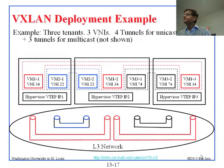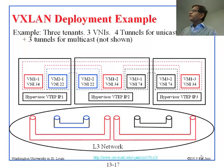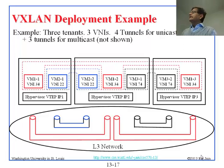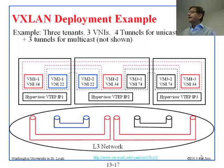Here is an example of the tunnels. We have one physical server with two VMs — one red tenant, one blue tenant — and a hypervisor. In another server there are three VMs: blue, red, and black. In another one, we have black and red. Blue should be able to communicate with blue and not know anything about red. Similarly, red communicates among themselves, not knowing anything about blue and black.